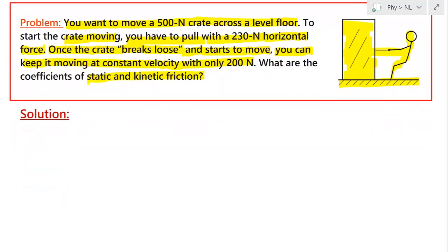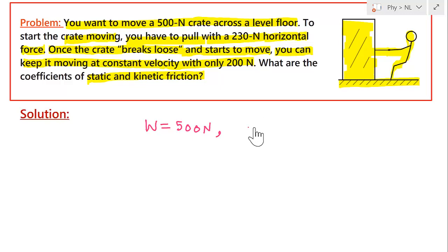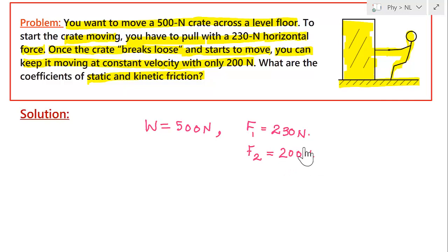What are the things given? We have been given the weight of the crate, that is 500 Newton. There are two forces: when the crate just breaks loose, F1 is equal to 230 Newton, and when moving at constant velocity, the force required is 200 Newton. The target variables — the unknowns — are the coefficient of static friction μs and coefficient of kinetic friction μk.